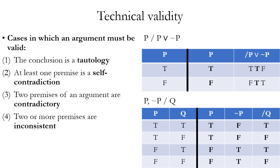In our second sample argument, the premises are P and not P — contradictories — with conclusion Q. You can see in the truth table that in every row the premises have opposite truth values, so it's never going to satisfy the definition of invalidity; therefore it's technically valid. The fourth case is where two or more premises are inconsistent — there's never a row where all of them are true. All contradictory statements are inconsistent, but not all inconsistent statements are contradictory, so this is a broader category that also guarantees technical validity.